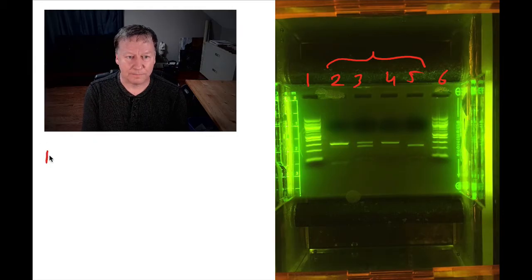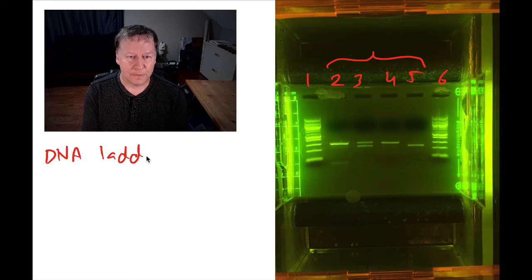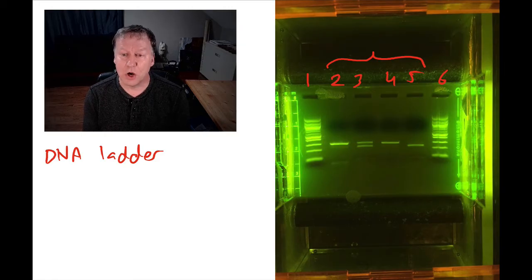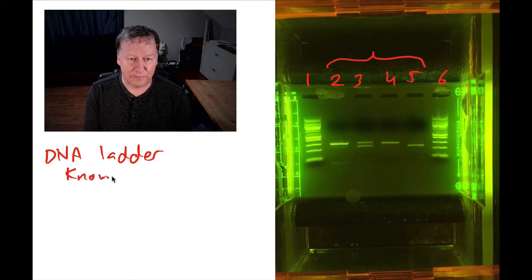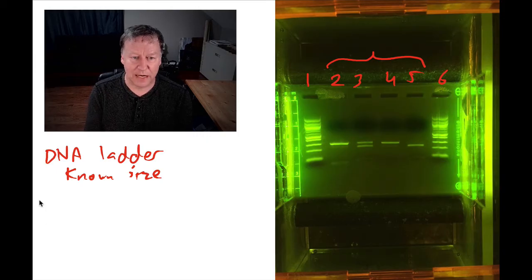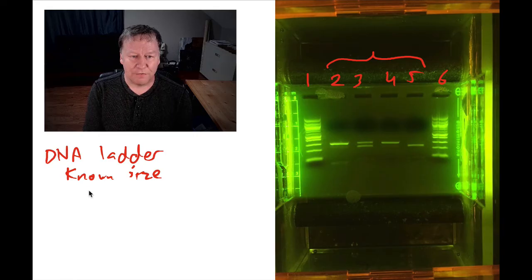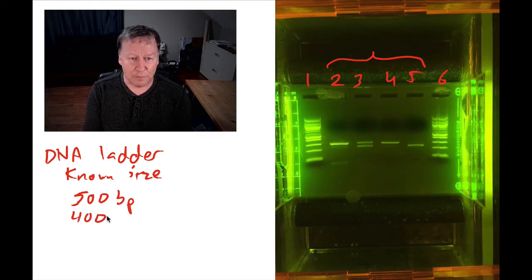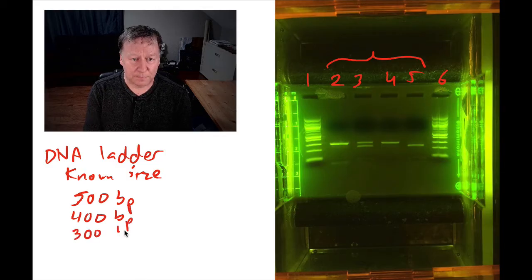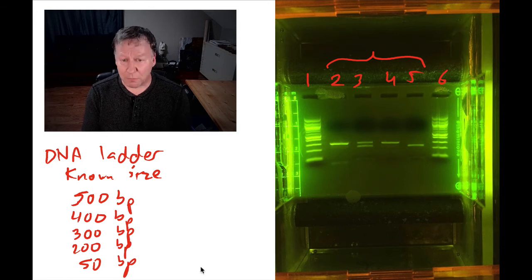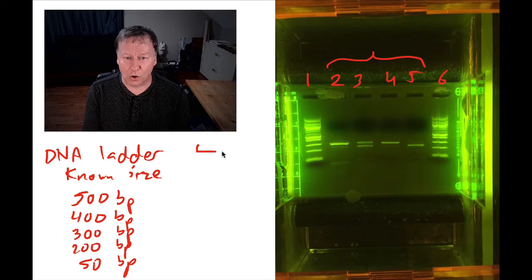These are also sometimes called a DNA standard. What a DNA ladder is, is a collection of pieces of DNA of known size. Scientists can purchase DNA ladders from biological supply companies that have pieces of known size. For example, I might order a DNA ladder that contains five pieces of DNA. One of them is 500 base pairs long. Another piece in there will be 400 base pairs. 300 base pairs. 200 base pairs. And then the final one would be 50 base pairs, let's say, just to break it up a little.